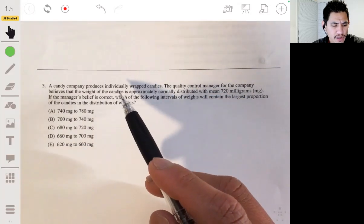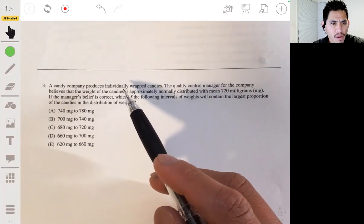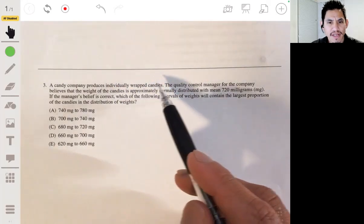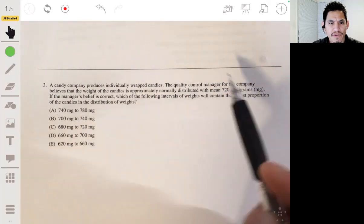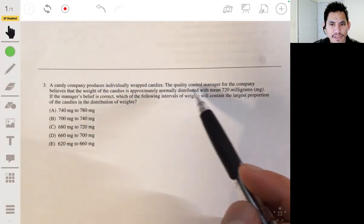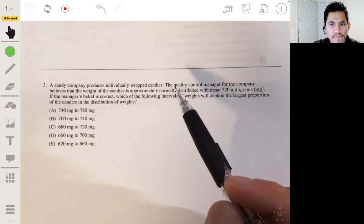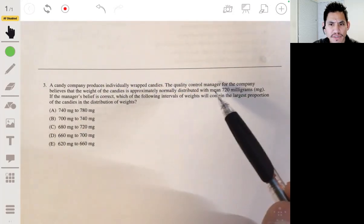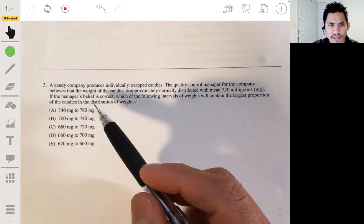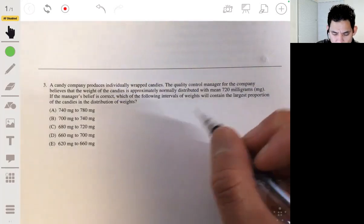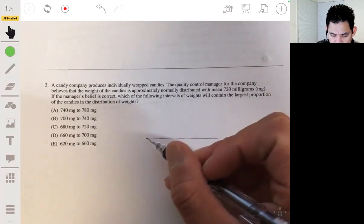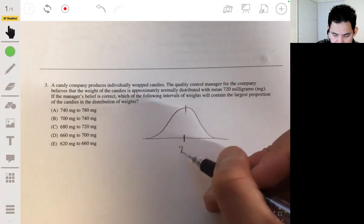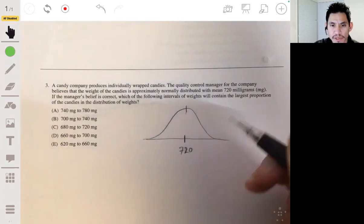So three, a candy company produces individually wrapped candies. The quality control manager for the company believes that the weight of the candies is approximately normally distributed with mean 720 milligrams. If the manager's belief is correct, which of the following intervals of weights will contain the largest proportion of the candies in a distribution of weights? So if it's normally distributed, it'll fall somewhat of a bell shape. As a mean of 720, the 720 will be in the middle like that.